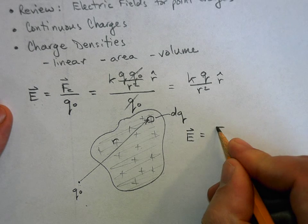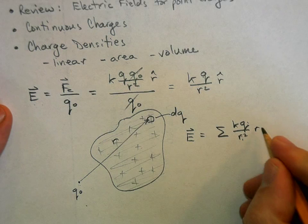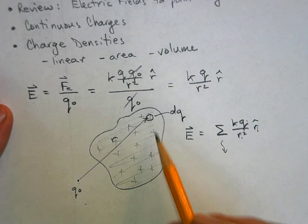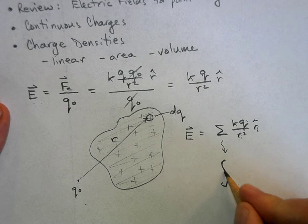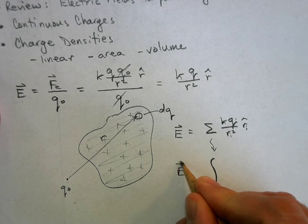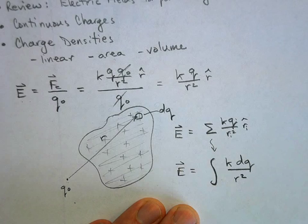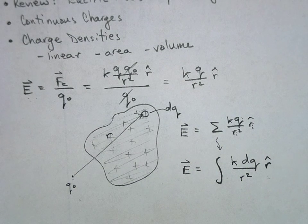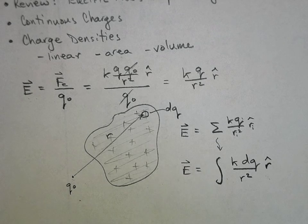If we said that E is equal to the sum of k·qᵢ over rᵢ² in the r-hat direction, we're going to take this and instead of q sub i we'll use dq, and instead of the sum we'll use an integral sign. So E equals the integral of k·dq over r² in the r-hat direction. That r-hat direction is what makes this a pain in the neck. We have to be really careful about what charge distributions we choose to tackle using integral calculus, because we can really only do it for highly symmetric charge distributions.